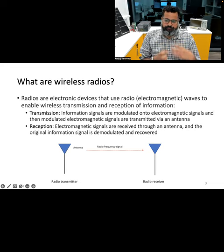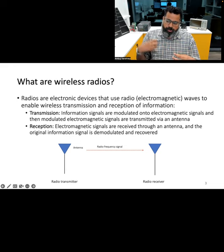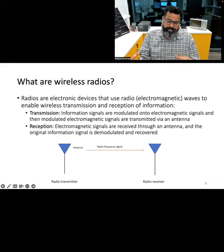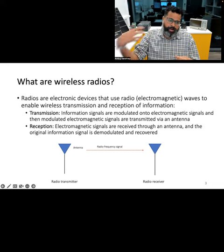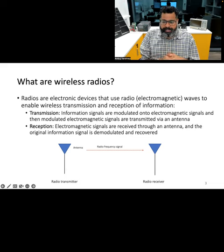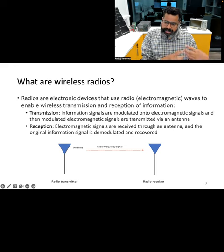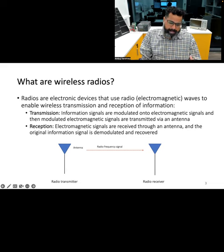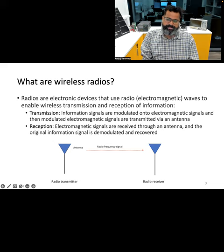Essentially, radios are devices that take an information signal — such as audio, video content, or a sensor reading — and modulate the signal onto a higher frequency electromagnetic signal, which is then transmitted via an antenna. Electromagnetic signals propagate over the air, and at the receiving end, the electromagnetic signal is captured by another antenna, demodulated, and the original information is recovered at the receiving electronic device.